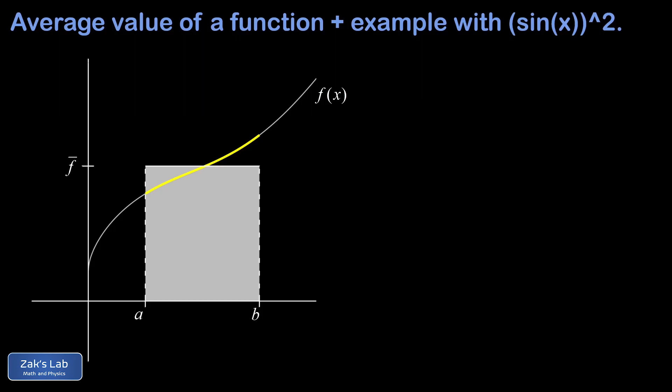It's not hard to write down the area under this rectangle. The area of a rectangle is just the height of it times the width, so that's f-bar times (b - a), where (b - a) is the interval width, and this is supposed to be equal to the area under the curve f(x)—well that's an integral.